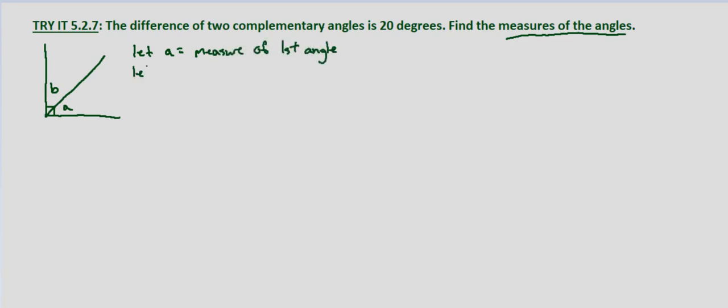And let B equal the measure of the second angle. And as always, you can choose whatever variables you want to use for the measures of these angles. I'm just using A and B. That's what I put in my diagram here.